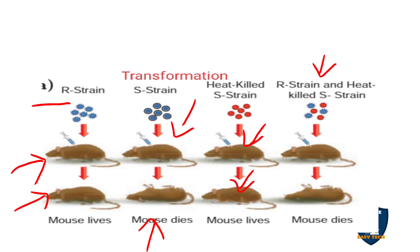When the R strain and heat-killed S strain are mixed and given to the mouse, the mouse dies. This is because the avirulent R strain has its DNA transformed by the virulent material from the heat-killed S strain. The R strain is transformed into the S strain. That DNA transfers the virulent character — this is called transformation, a change in one capacity of DNA to another character.